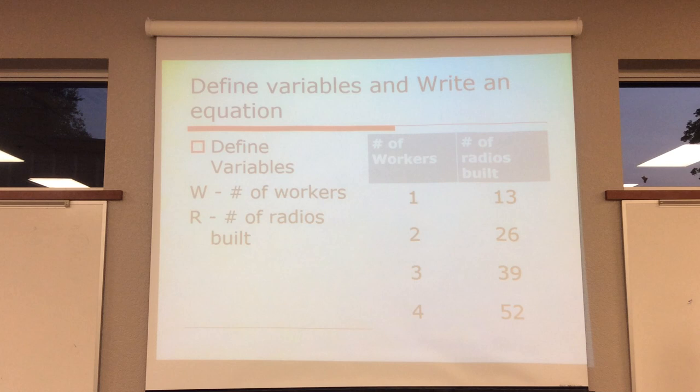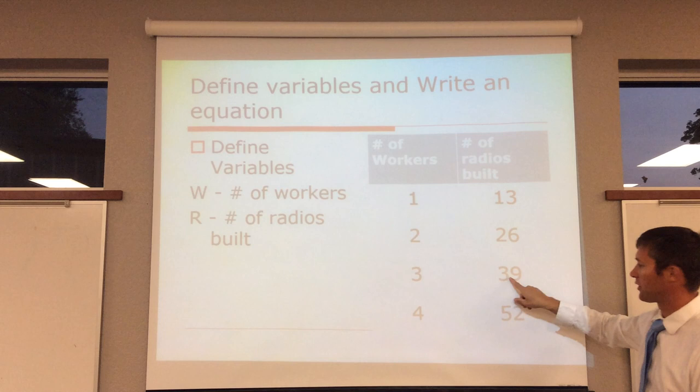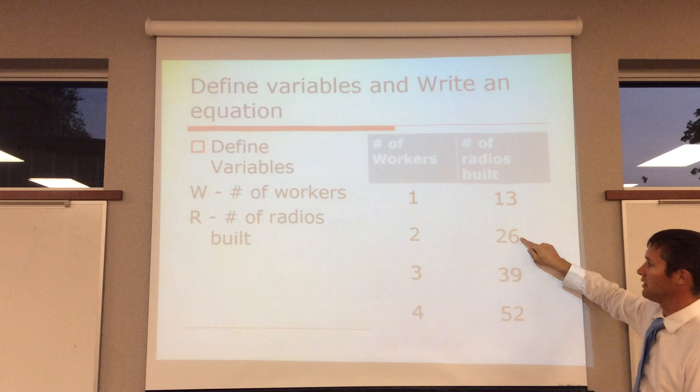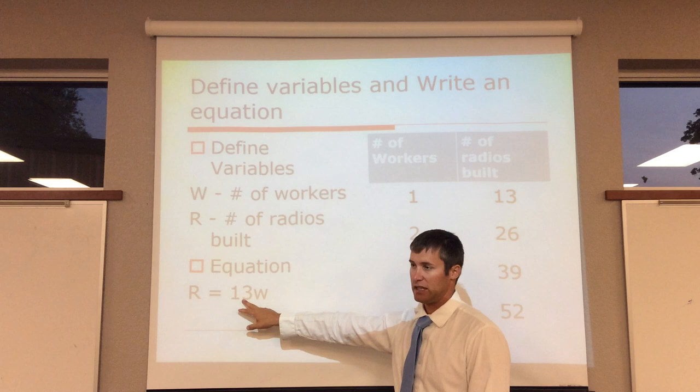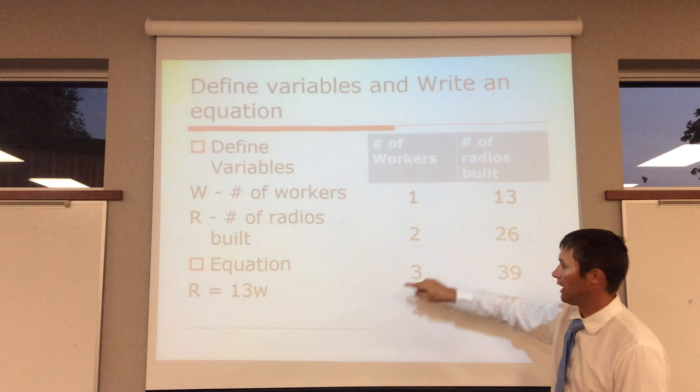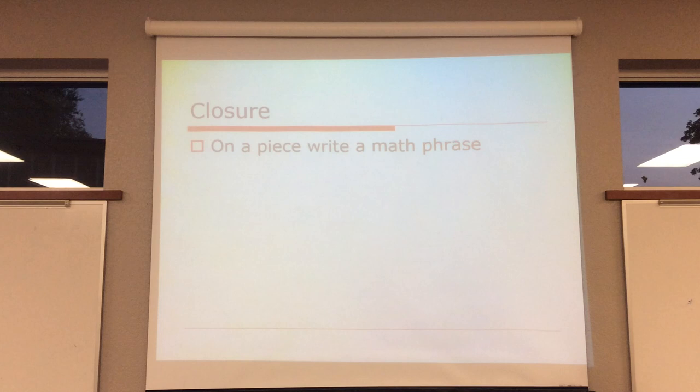Now, how do I write an equation for how many radios I have built? Well, if you think about it, what's the pattern? One to 13, two to 26, three to 39, four to 52. If you look at it, what we're doing is we're adding 13 radios for every one worker. So, my equation would be the number of radios built, r, is equal to 13 times every worker I have. So if you had two workers, two times 13 gives you 26. Three times 13 gives you 39. And four times 13 gives you 52. And so, that's a quick way we could check it to see that it works.